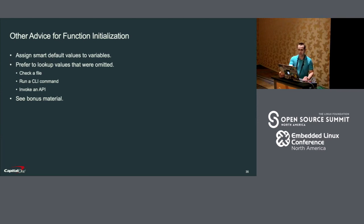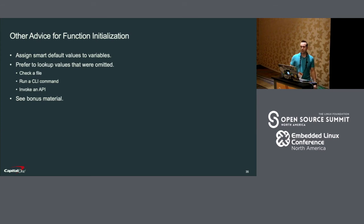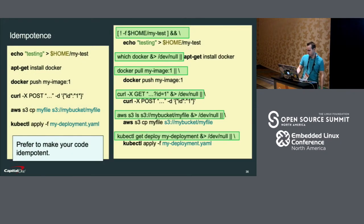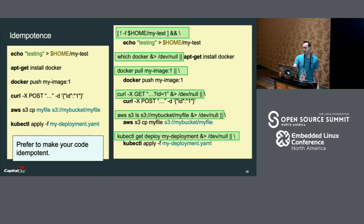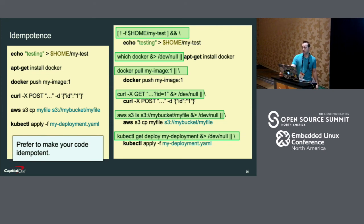In this slide I discuss some advice for initializing your functions. First, you should assign smart default values to your variables whenever possible. Second, if a variable was omitted, it's better to look up a value than to fail — you can look up the value using a file, a CLI command, or by invoking an API. Regarding idempotence: it will be much easier to rapidly develop your bash scripts if you make every step idempotent. For example, check that a file does not exist before you write to it, check that a program is not installed before installing it, check that images do not exist before pushing them, and check that resources don't exist before creating them with curl, AWS, or kubectl.